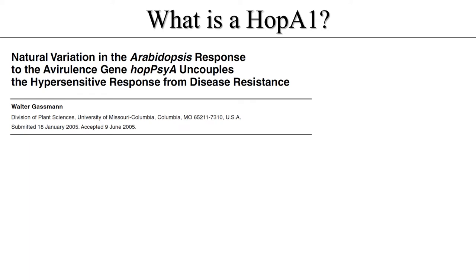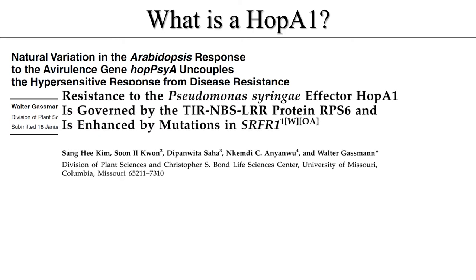HopA1 is a kind of effector derived from Pseudomonas syringae pv. syringae 61. The first paper describes the first discovery of HopA1. The second paper describes that HopA1 is recognized by a resistant protein called RPS6, which has the form TIR-NBS-LRR, which means once HopA1 is recognized by RPS6, an immune response can occur in the plant.